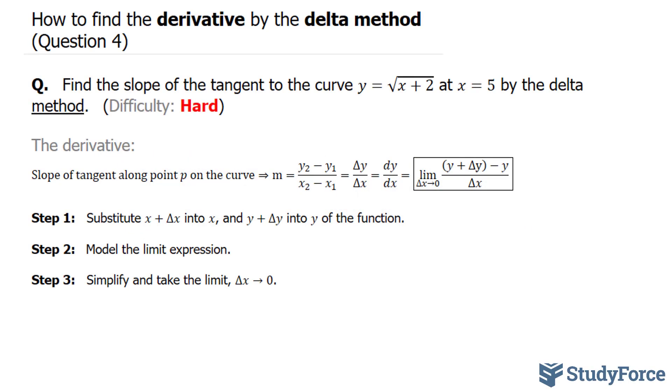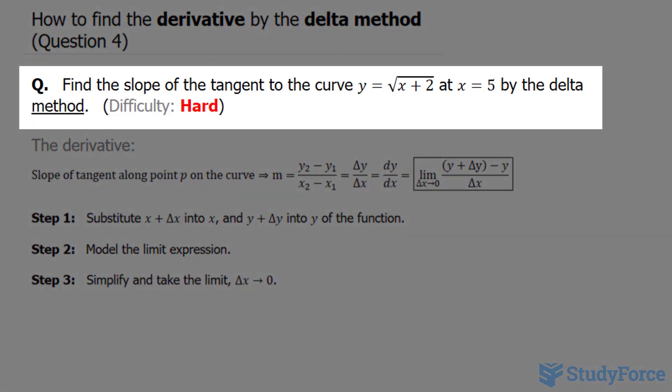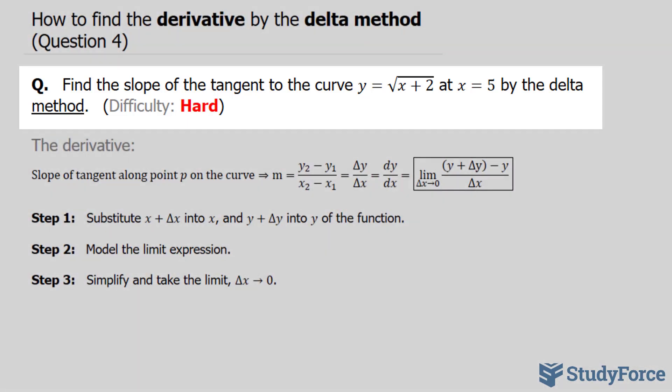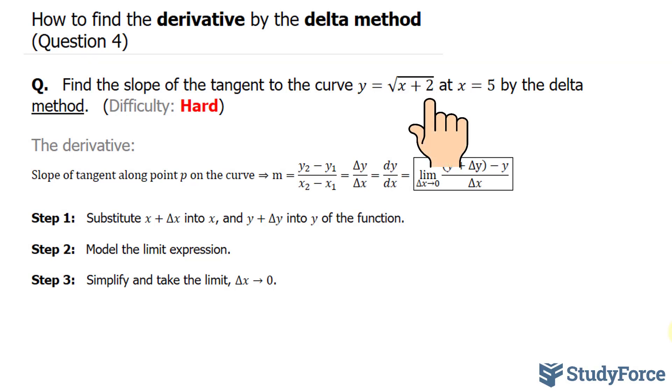In question 4 of our series where we find the derivative by the delta method, we're asked to find the slope of the tangent to the curve y equals the square root of x plus 2 at x equals 5 by the delta method. This question comes from one of our viewers who is curious as to what happens if the radicand has a plus 2 included. So let's get started.